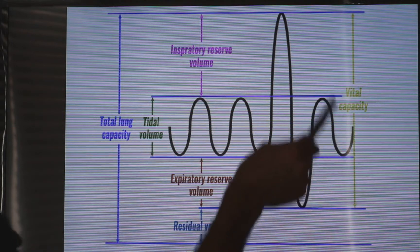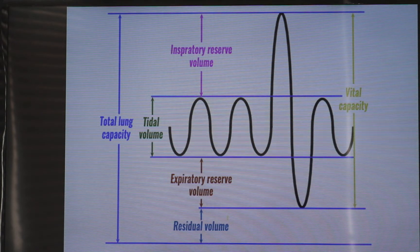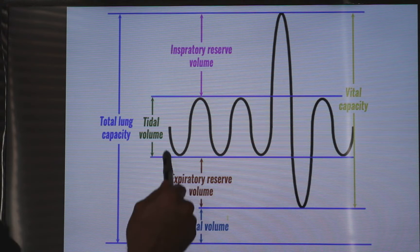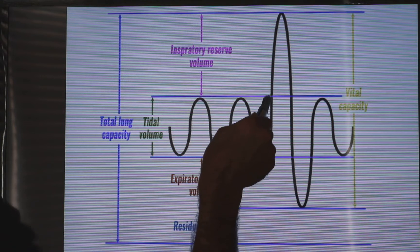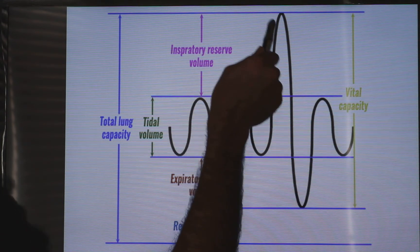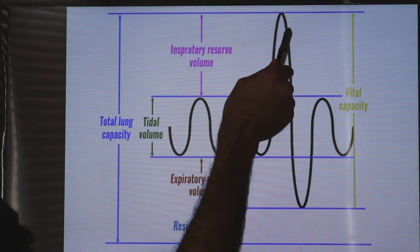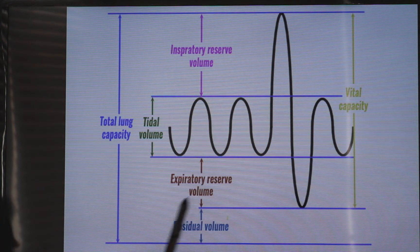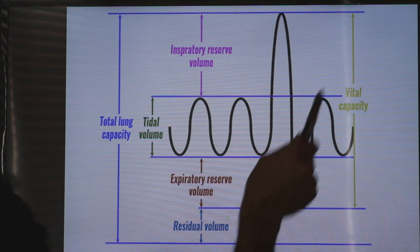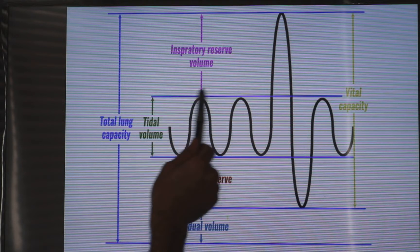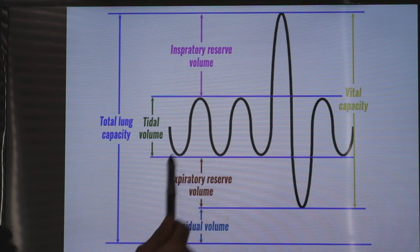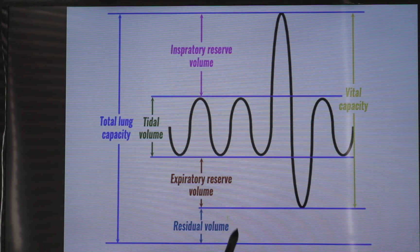The vital capacity is the maximum expiration after the maximum inspiration. So the addition of the tidal volume (500 cc), the inspiratory reserve volume (3000 cc), and the expiratory reserve volume (about 1100 cc) gives the vital capacity.